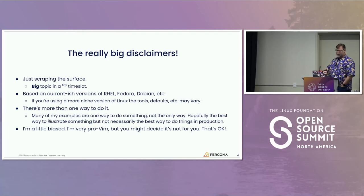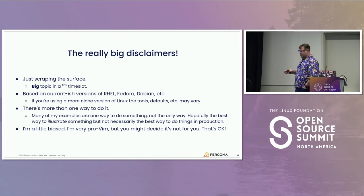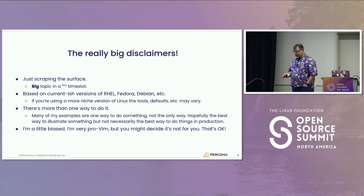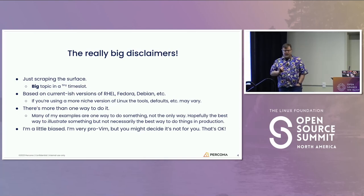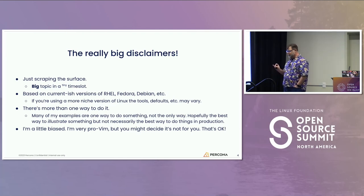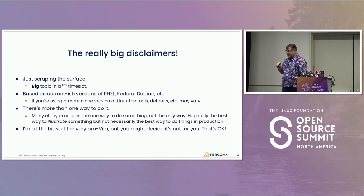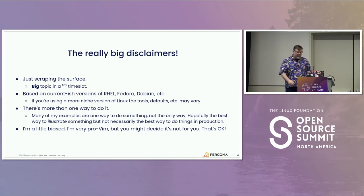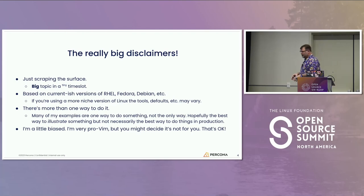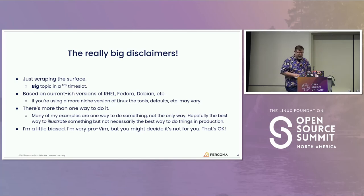Some big disclaimers for the talk: this is just going to scrape the surface. I'm going to talk real fast and go over a lot of basics. You can download the slides off my website, dissociatedpress.net. This is a very big topic in a very small time slot. Also, when I talk about utilities like Cut, Unique, Sort — there are different versions on different systems. Mac users may have BSD versions that work slightly differently than GNU versions.